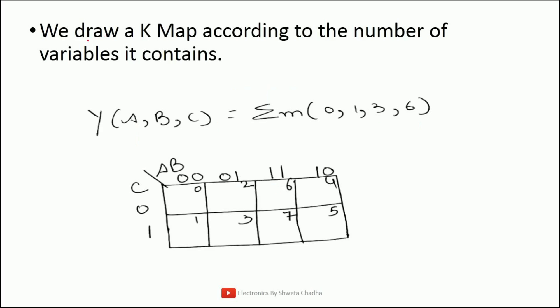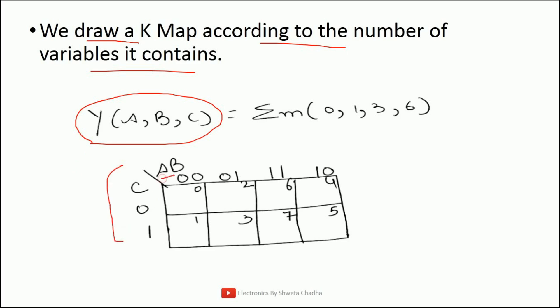The first rule is we draw a K-map according to the number of variables it contains. For example, in this given example we already have 3 variables A, B, and C. So step number 1 is going to be we need to draw a K-map as per the given expression. We need to draw a 3-variable K-map, which I have drawn over here, having variables A, B, and C. Similarly, if you are going to have 2 variables, then you need to draw a 2-variable K-map. Similarly, if you are going to have a 4-variable expression, then you will be drawing a 4-variable K-map.